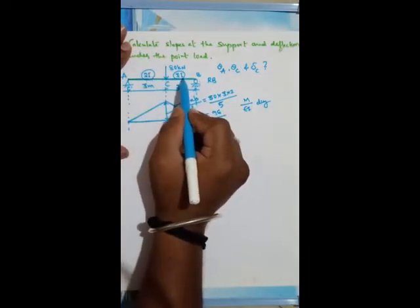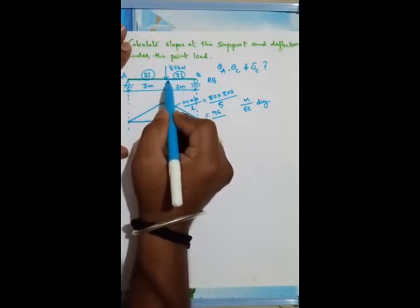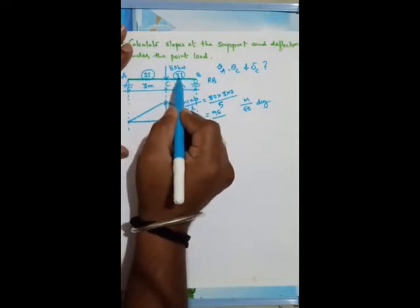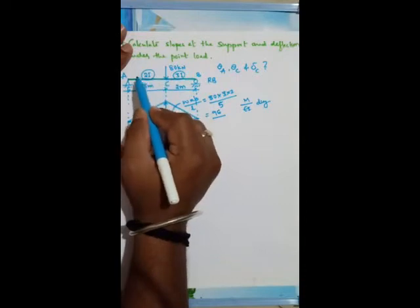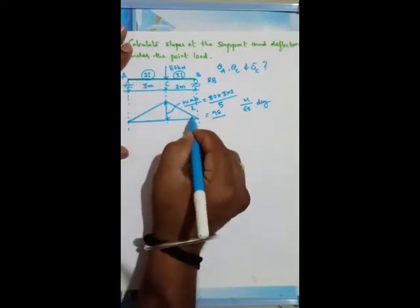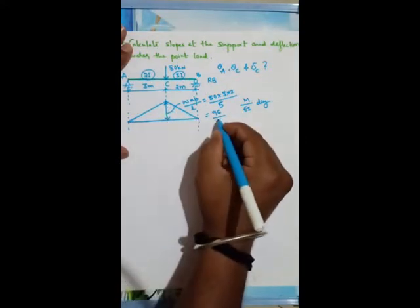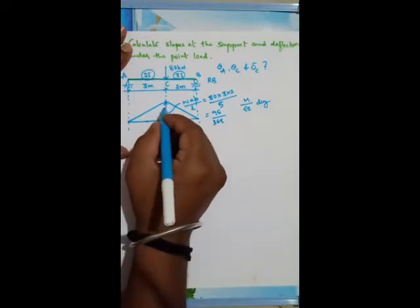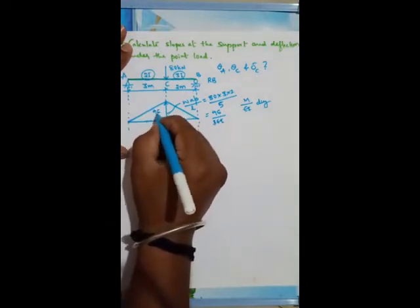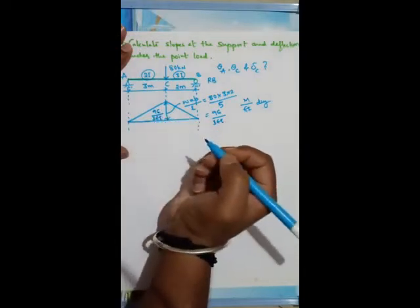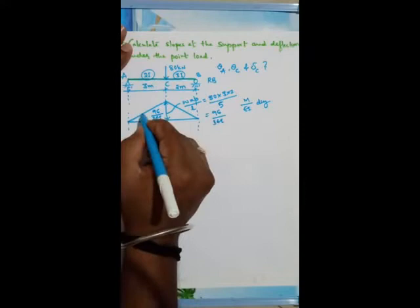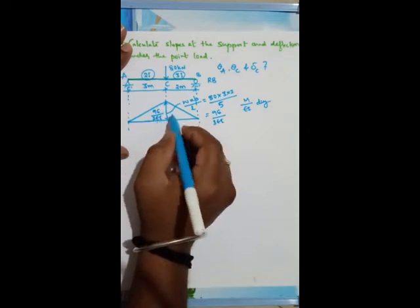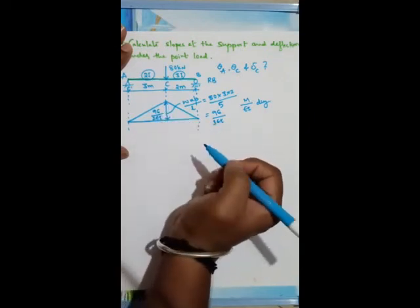Now considering the moment of inertia: from A to C it is 2I, and from C to B it is 3I. Exactly at point C the moment of inertia changes. So if I consider the right-hand side (C to B, using 3I), I write it as 96/3EI. For the left-hand side (A to C, using 2I), it is 96/2EI. So this triangle has height 96/2EI and this triangle has height 96/3EI.